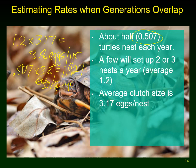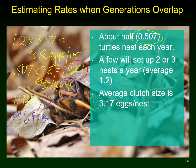On average, half those eggs are going to be males and half are going to be females. Assuming a 1-to-1 ratio, we take the 1.927 eggs per female and divide by two, giving us 0.96 female eggs per female per year. So that is your female egg production rate — 0.96.